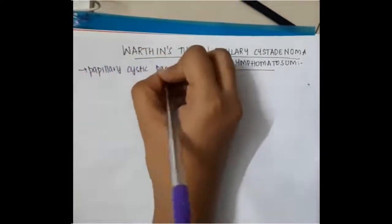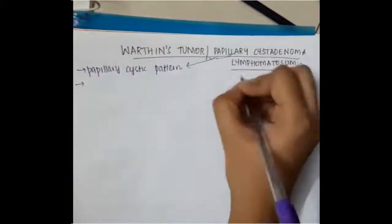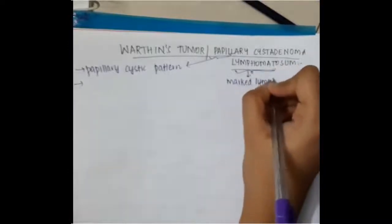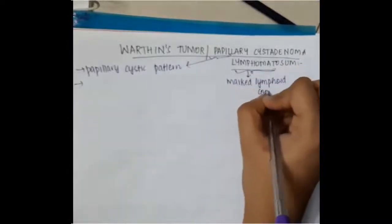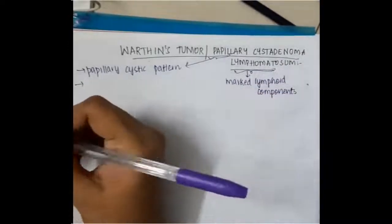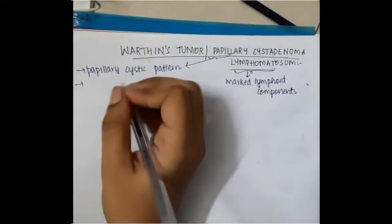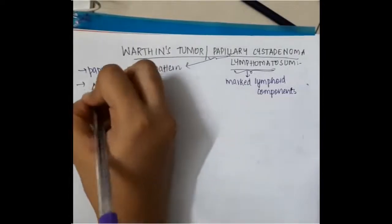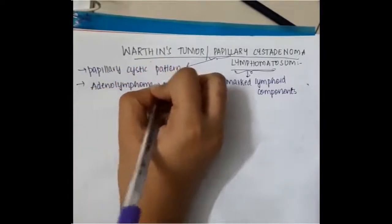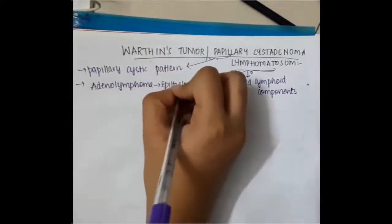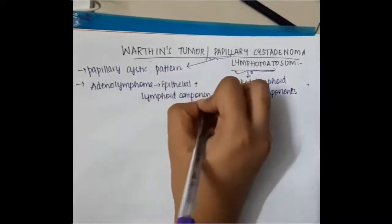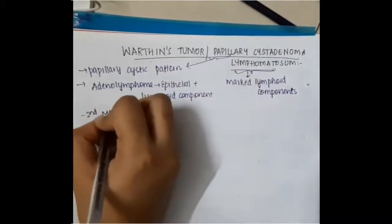Warthin's tumor has a papillary cystic pattern, which is why we call it papillary cystadenoma. Lymphomatosum refers to the presence of marked lymphoid components. It is also called adenolymphoma because it contains both epithelial components and lymphoid components.